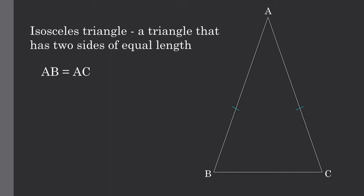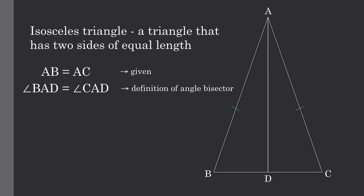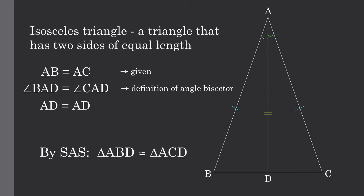We know that side AB equals side AC because of our definition of an isosceles triangle. Next, we are going to draw the line that is the angle bisector of A. Because of the definition of an angle bisector, angle BAD must equal angle CAD. And of course, AD equals AD. So by side-angle-side congruency, triangle ABD must be congruent to triangle ACD, proving that angle B equals angle C.